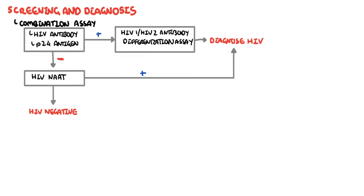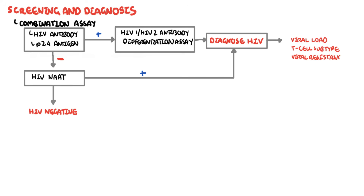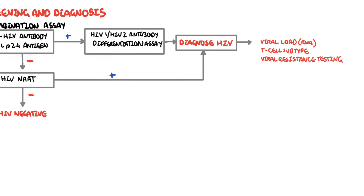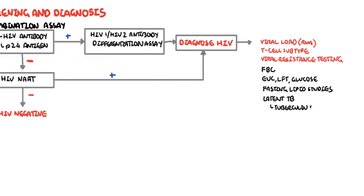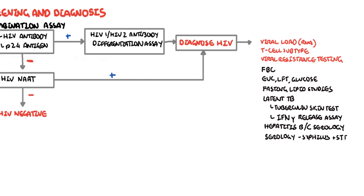Other investigations for HIV once confirmed: get the viral load by looking at the HIV RNA to establish a baseline, and perform T cell subsets to establish a CD4 cell count. You can also perform viral resistance testing at baseline. For blood work: blood count, EUCs, LFTs, glucose, fasting lipids, check for latent TB via tuberculin skin test and interferon gamma release assay, hepatitis viral serology, serology for syphilis and other sexually transmitted infections, serology for toxoplasmosis, as well as a cervical pap smear.